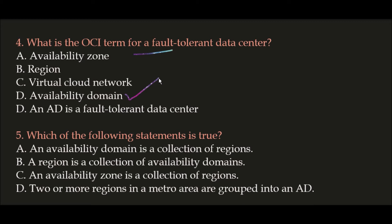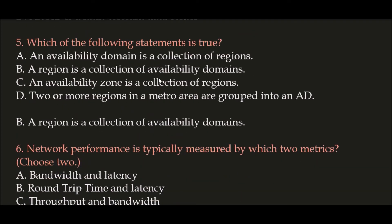Question 5: Which of the following statements is true? Option A: An availability domain is a collection of regions. Option B: A region is a collection of availability domains. Option C and D are also given. The correct and true statement is Option B: a region is a collection of availability domains. Options A, C, and D are all wrong.